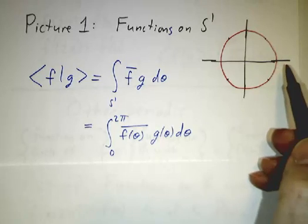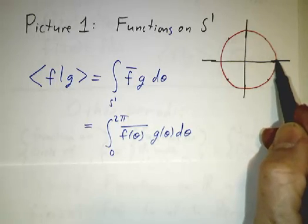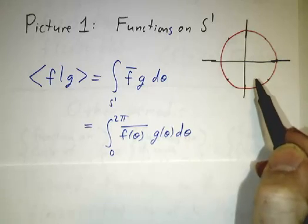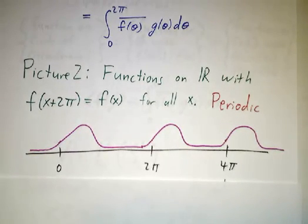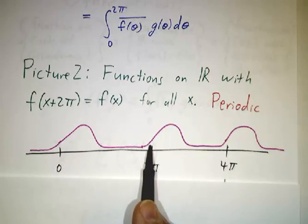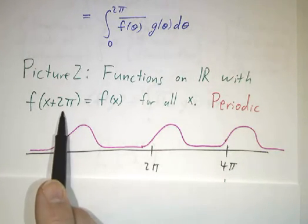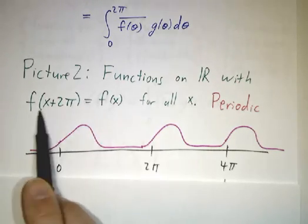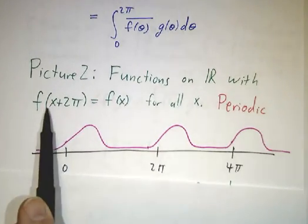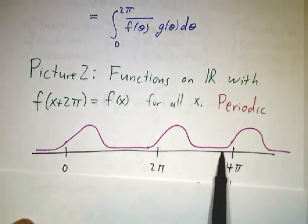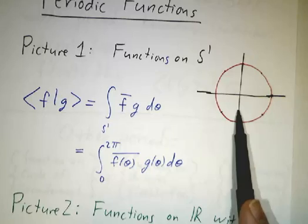The thing about the circle is you parameterize things by θ. A given point could be θ equals 0, or θ equals 2π, or 4π, or 6π — it's all of these things. So if you write your function as a function of θ, you wind up saying f(0) is the same as f(2π), and f(2π) is the same as f(4π), because they refer to the same point. In general, f(x + 2π) is always the same as f(x). So you get a function defined on the real line that repeats over and over — a periodic function on the real line, which is the same thing as a function on the circle.